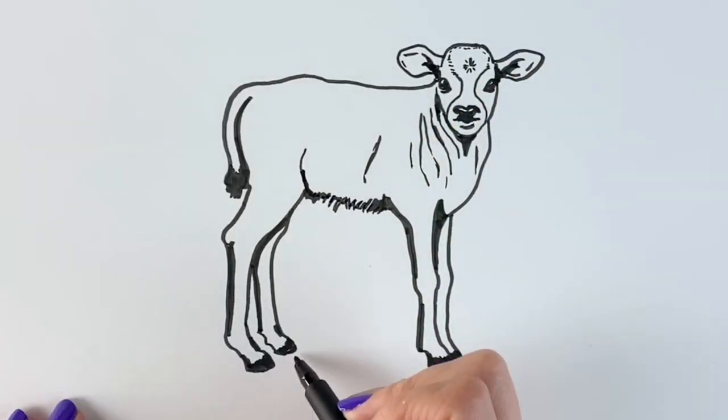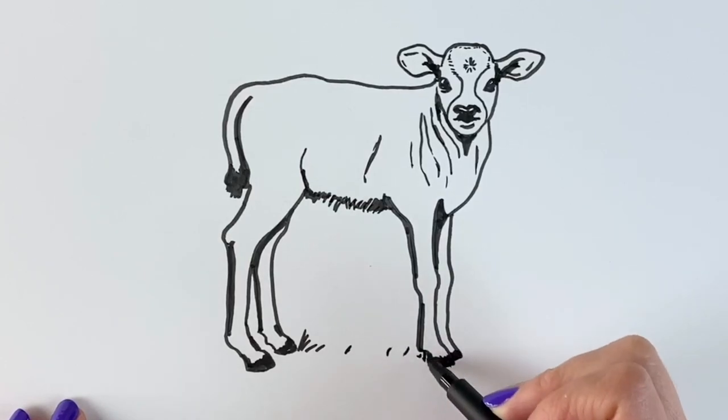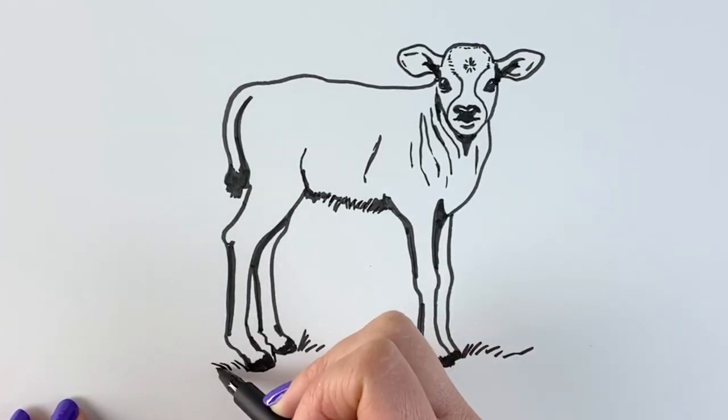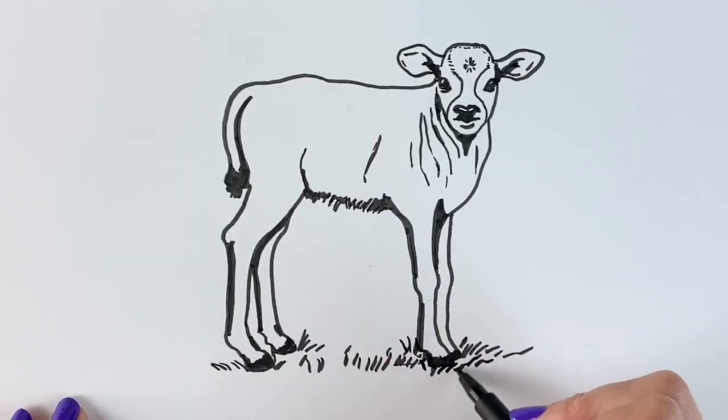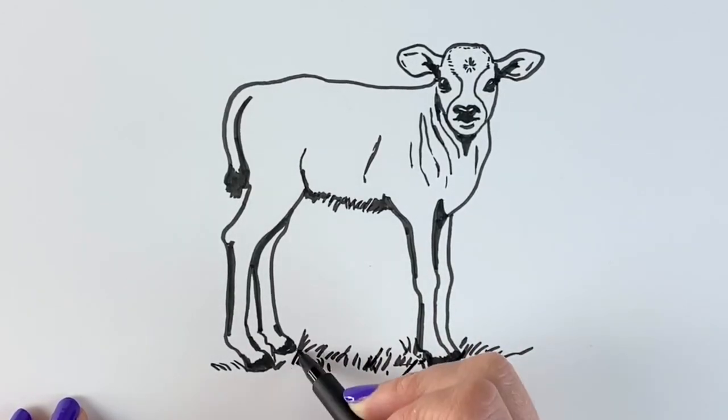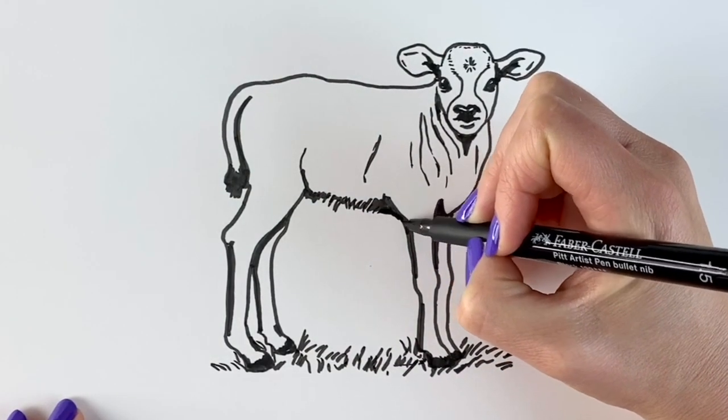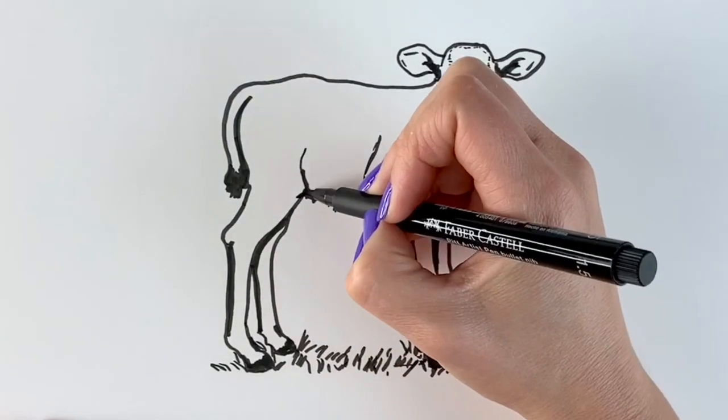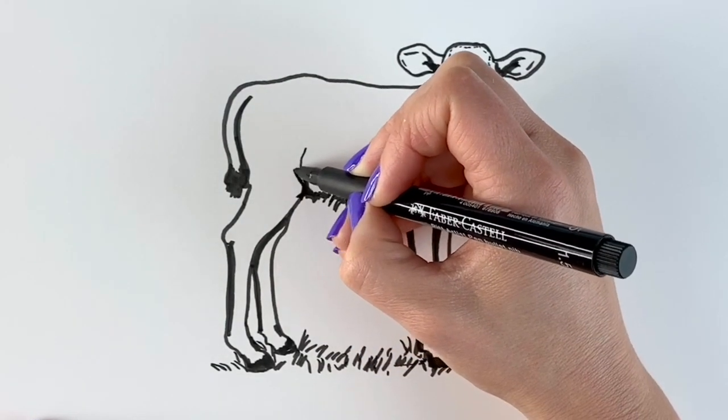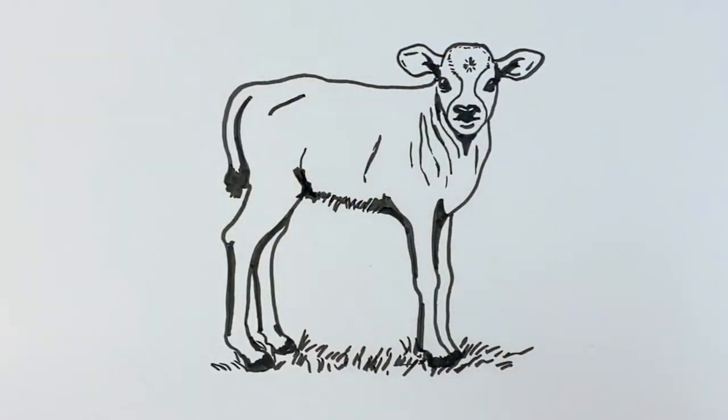And then now we're going to just draw some grass because we can't have it just floating in the air. I'm just going to bring this tummy down just a little bit more by adding a bit more shadow there. I'm just going to add in a little bit more shading just here. And one line just going across here just to show the muscle.